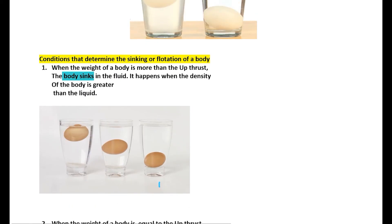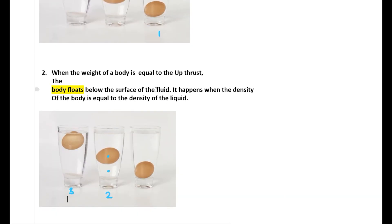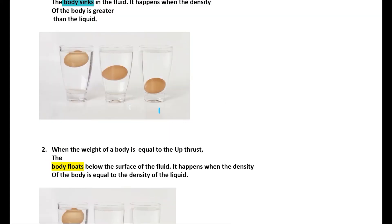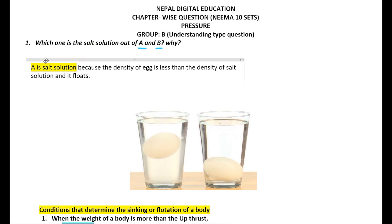From this we conclude that a body sinks when the density of the body is greater than the density of the liquid, and a body floats when the density of the body is less than the density of the liquid. In floating, there are two conditions: when the densities of liquid and object are equal, the body floats below the surface; when the density of the body is less than the liquid, it floats partially above the surface.